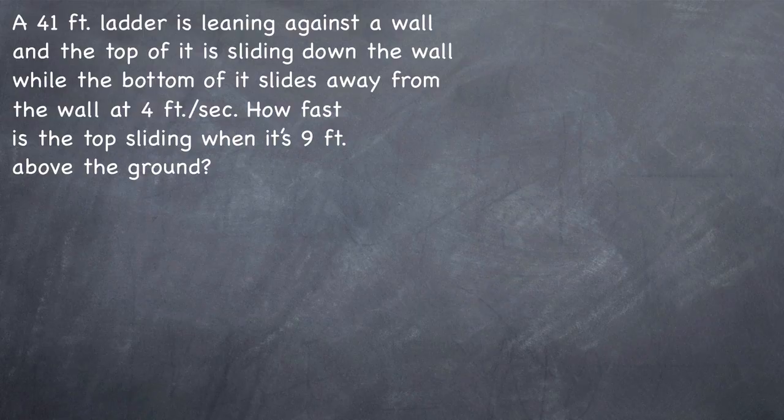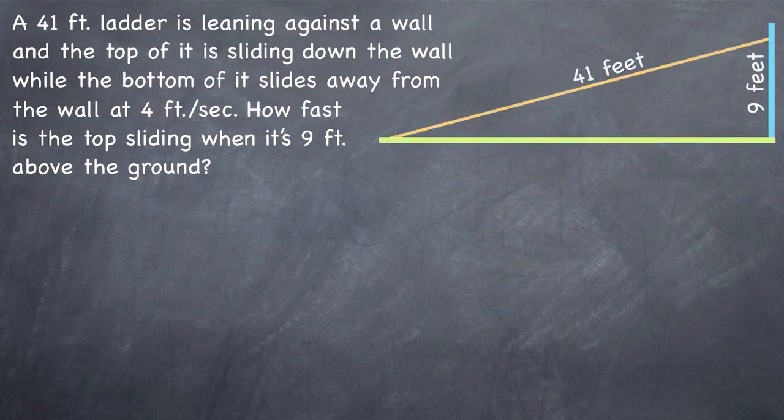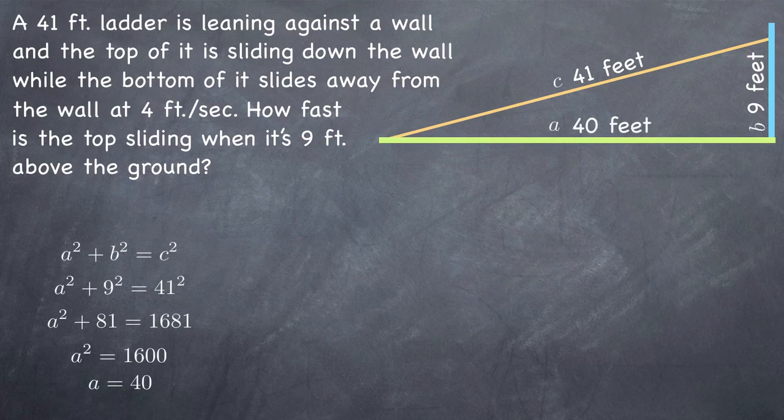The first thing we should realize is that we know two sides of the triangle formed by the ladder, the wall, and the ground. The ladder is 41 feet long and the top of it is 9 feet off the ground at the point in time we're interested in. We can use the Pythagorean theorem to find that the length of the third side along the ground is 40. Our equation will be the Pythagorean theorem and we'll plug in for the length of the ladder since it never changes.